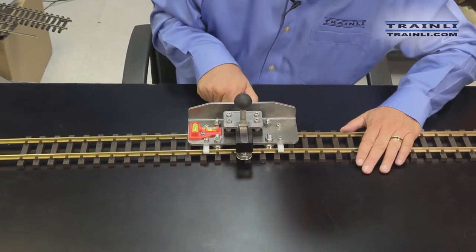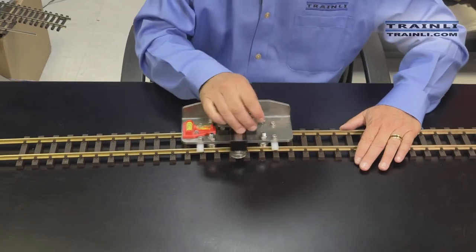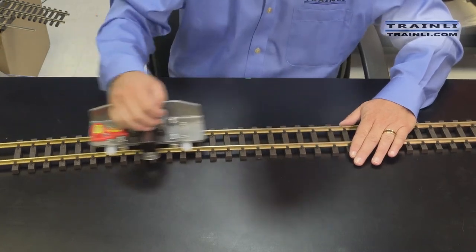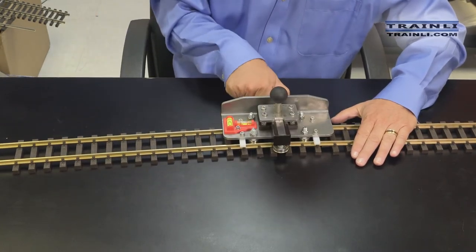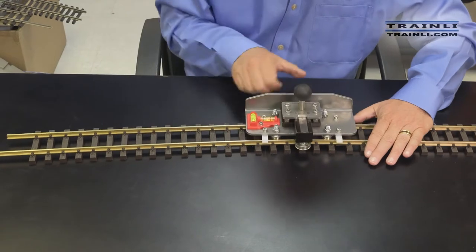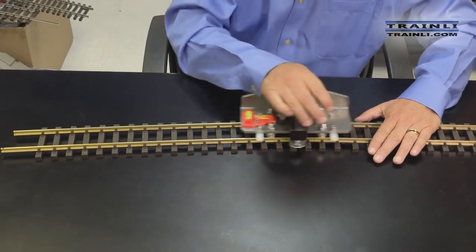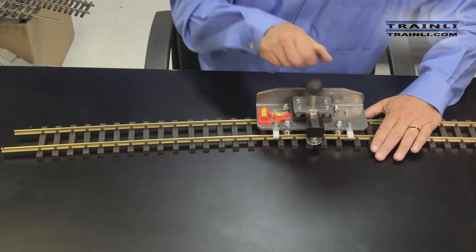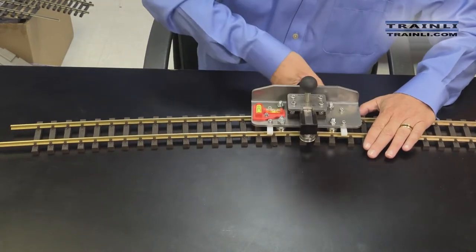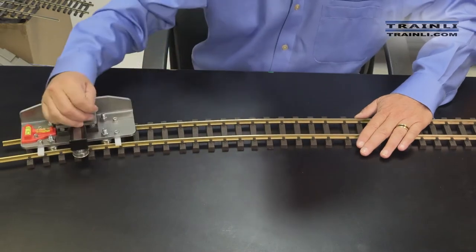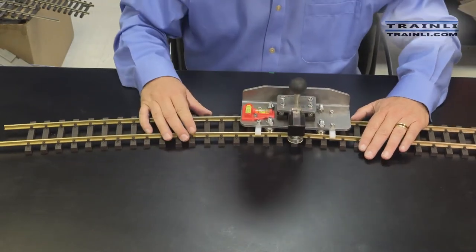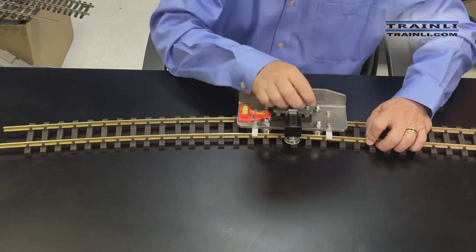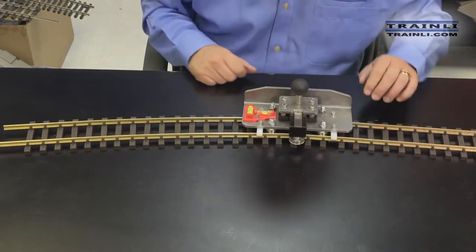Then what I do is I add a couple of quarter or half turns, and I just start going back and forth like this. And as you can see, it's now bending the rails.